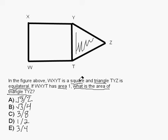Let's now put together what we know. So WXYT is a square, that means all sides are equal, right? And triangle TYZ is equilateral, which means all of these sides are equal. So all five sides are equal.